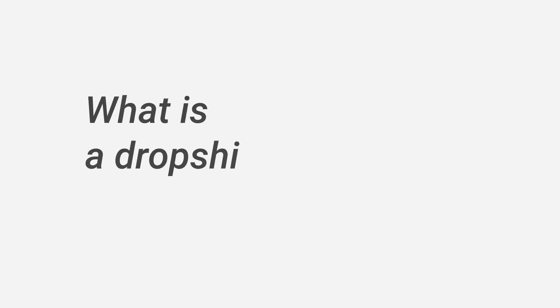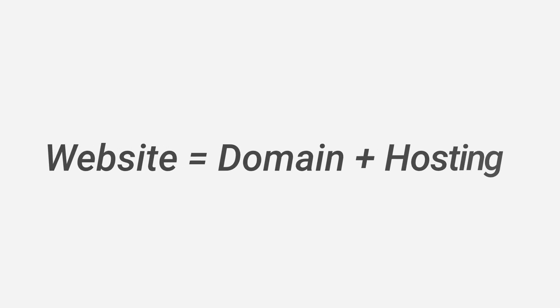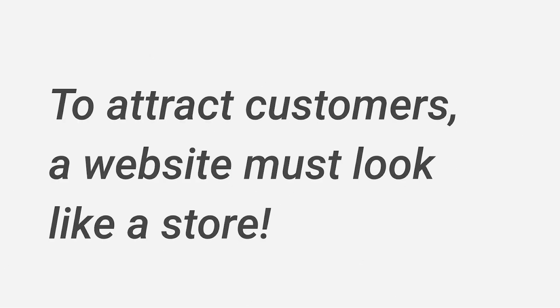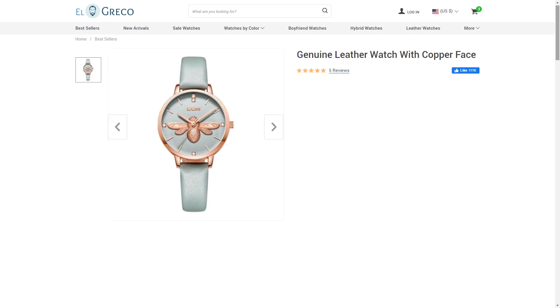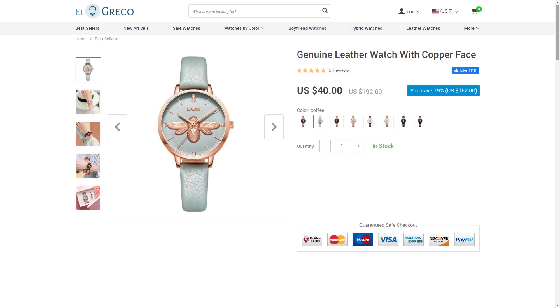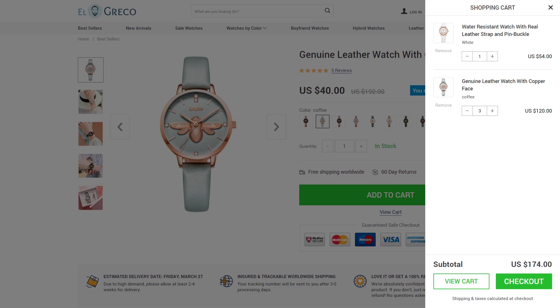What is a dropshipping website? Let's start from the beginning. An online store is basically a website, so you'll need a domain name and a host server. But that's just the very basics. To attract customers, a website must look like a store — it should have product categories, product pages with product titles, large detailed pictures, prices, payment gateways, a functional cart, and more.